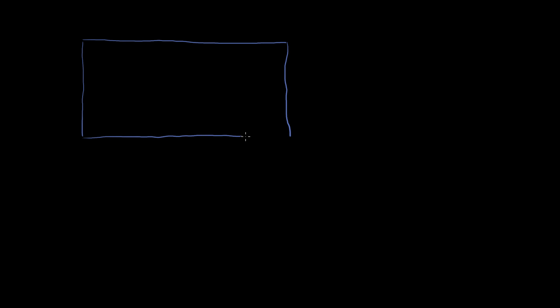Let's say we've got a rectangle. Draw the rectangle. There's the rectangle. And we have two diagonals across the rectangle — that's one of them, and then we have the other diagonal.